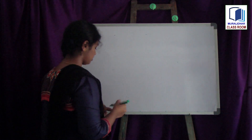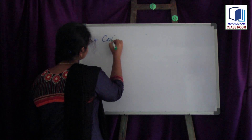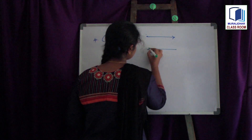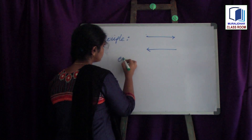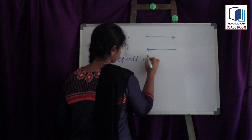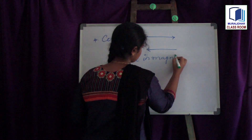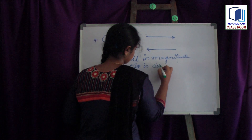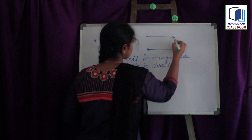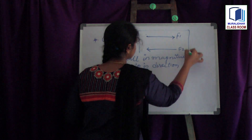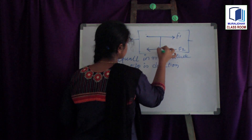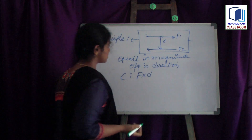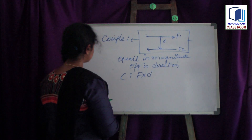Our fourth classification is couple. Couple also comes under parallel forces with equal magnitude but opposite in direction. These are parallel forces, meaning the distance between them is always constant, but they are equal in magnitude and opposite in direction always. Force 1 and Force 2 — this system is known as a couple. This couple is represented by force into distance.